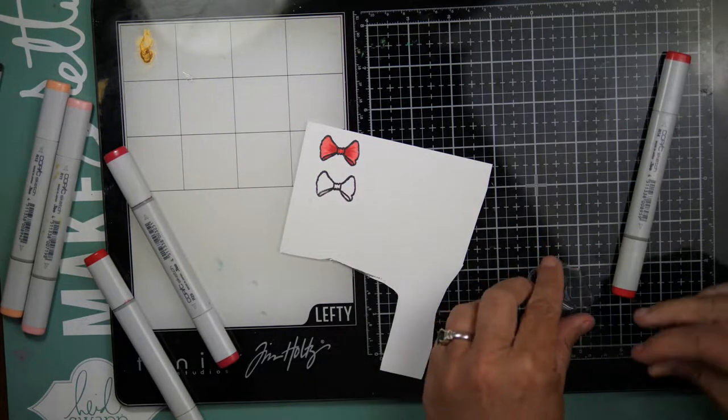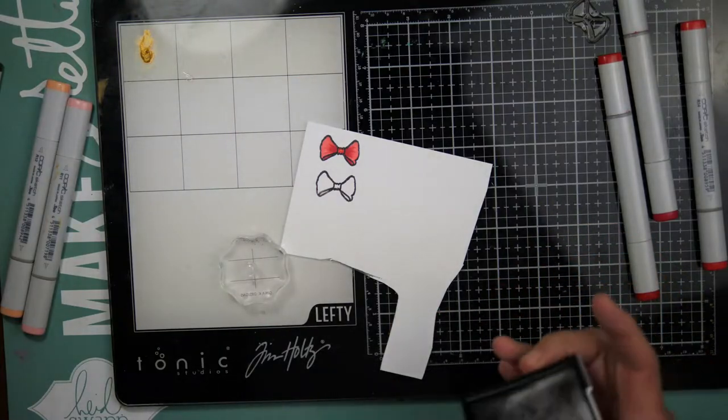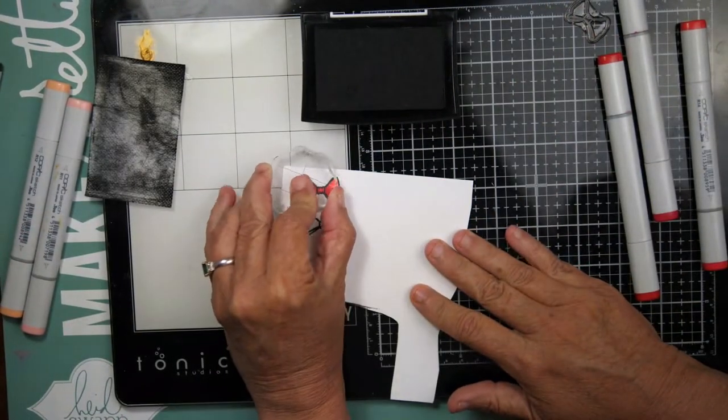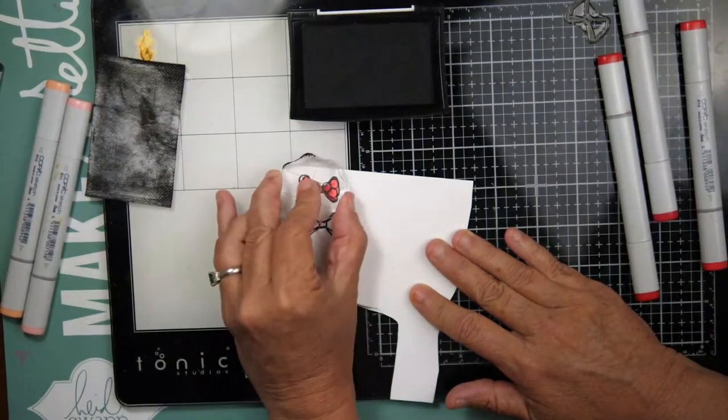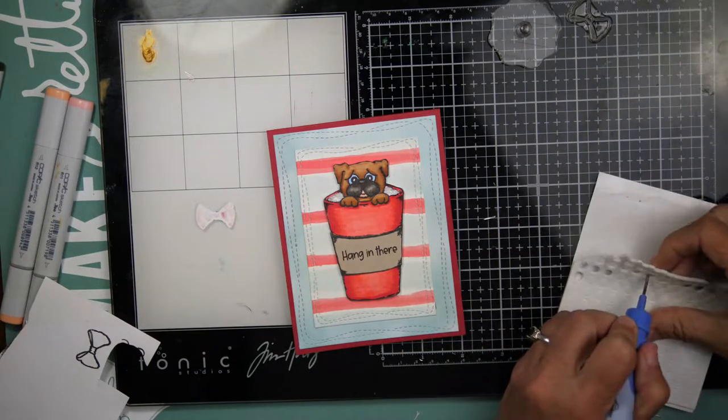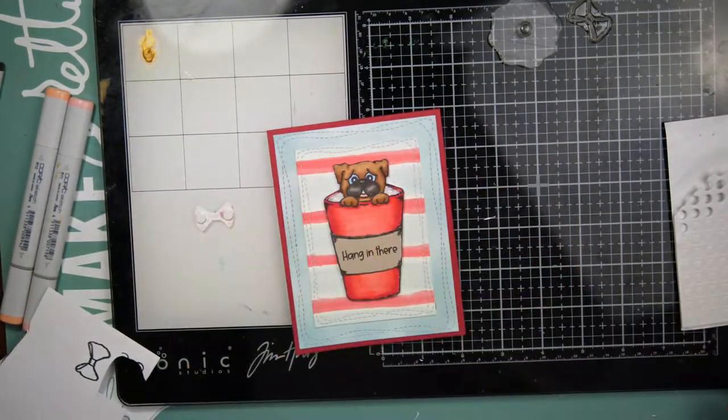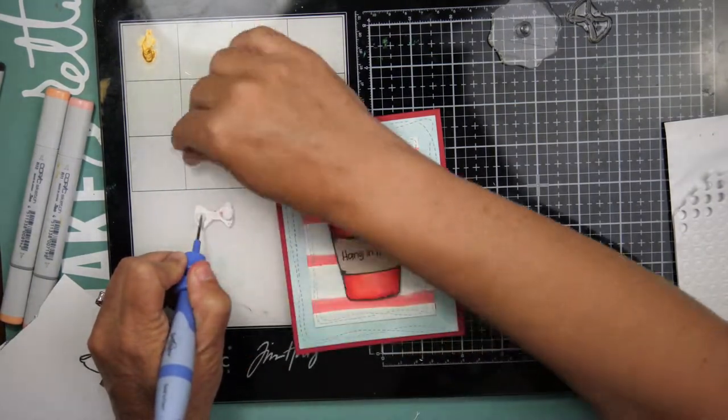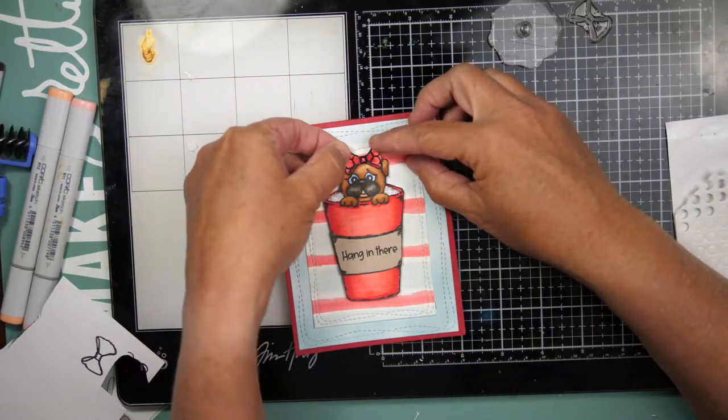And then off camera I will fussy cut that little bow out, and I will add a little bit of that foam adhesive. Actually, I'm using this particular foam adhesive because the pieces are super small and fit perfectly there. So I'm going to position it. I thought about going a little bit sideways, but I decided to go with it straight on.